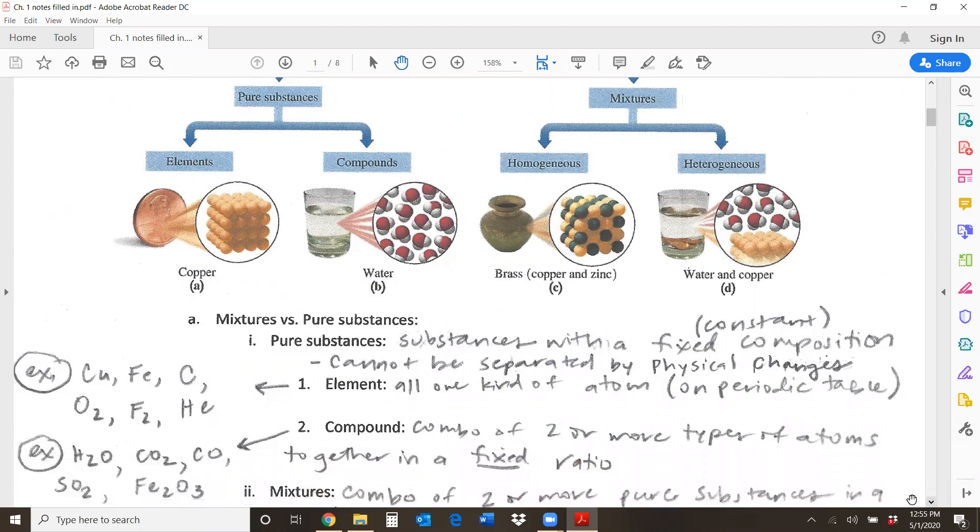If elements are put together, then you can make what's called a compound. A compound is also a pure substance. So a compound is a combination of two or more different types of atoms that are together in a fixed ratio. Fixed ratio is super important here. And I'll explain the difference as we go.